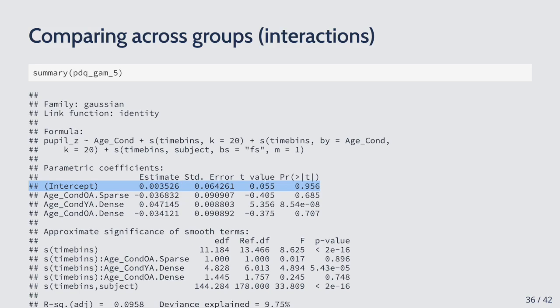I recommend looking at the plot first and then interpreting the summary in light of what you see, going back and forth to make sure you understand the summary correctly. In real research, I look at the plot first, then the summary, then back and forth to make sure I'm interpreting things correctly. The best approach is to look at the plot after the model finishes fitting and then try to reconcile it with the summary.